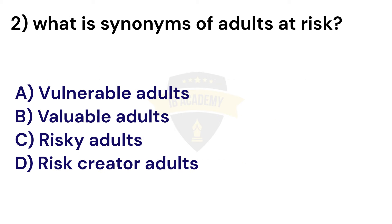Question 2: What is a synonym of 'adults at risk'? Option A: Vulnerable adults. Option B: Valuable adults. Option C: Risky adults. Option D: Risk creator adults. The correct answer is Option A. Adults at risk are sometimes called vulnerable adults.